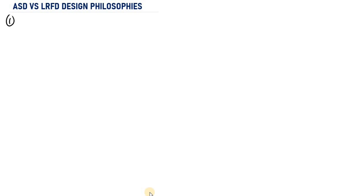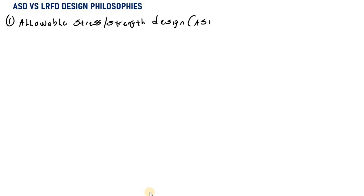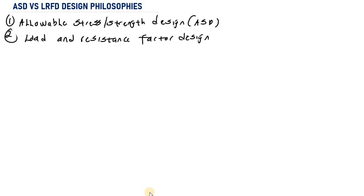Hello everyone. In the world of structural designing, there are two main design philosophies which are commonly used. The first is Allowable Stress or Strength Design, which can be abbreviated as ASD. The second is Load and Resistance Factor Design, which can be abbreviated as LRFD.